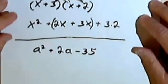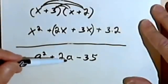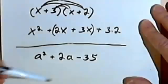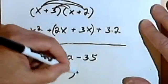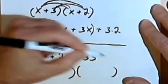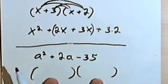Okay, so here's the next problem. I want to factor a squared plus 2a minus 35. So as before, I'm going to start out... I'll put in my two sets of parentheses since I know that what I want is basically two binomials.